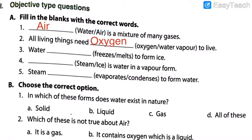As you can see I am writing the answers in the blanks. All living things need oxygen to live. Number three: water dash to form ice — freezes or melts. My dear students, when water changes into ice like I showed you in the diagram, which process is it called? Do we have to melt the water? No, we have to keep it into freezing. So water freezes to form ice. Freezes is the correct answer. I am going to write it down.